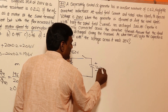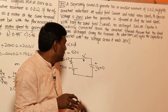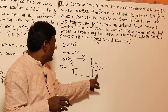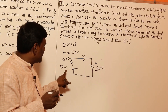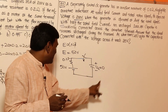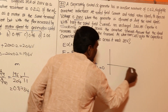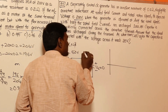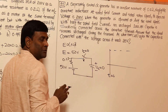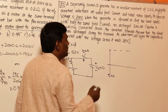Before closing the switch, V_C = 0. Immediately after closing, voltage across the capacitor cannot change instantaneously, so V_C = 0 at t = 0. Initially a large rush current of 50 / 0.1 = 500 amperes flows. The voltage then gradually increases in a first-order transient toward the final value of 50 volts.